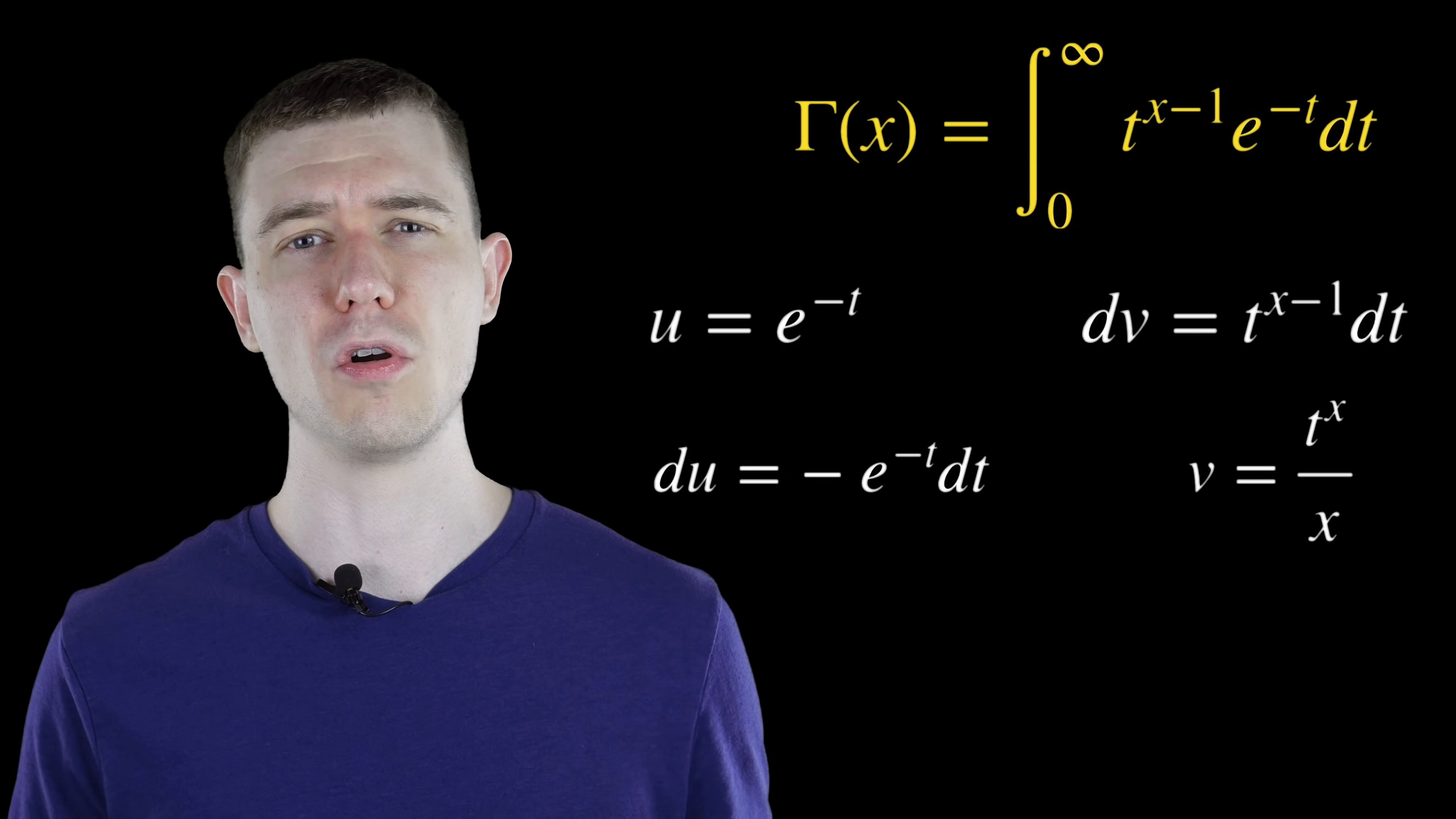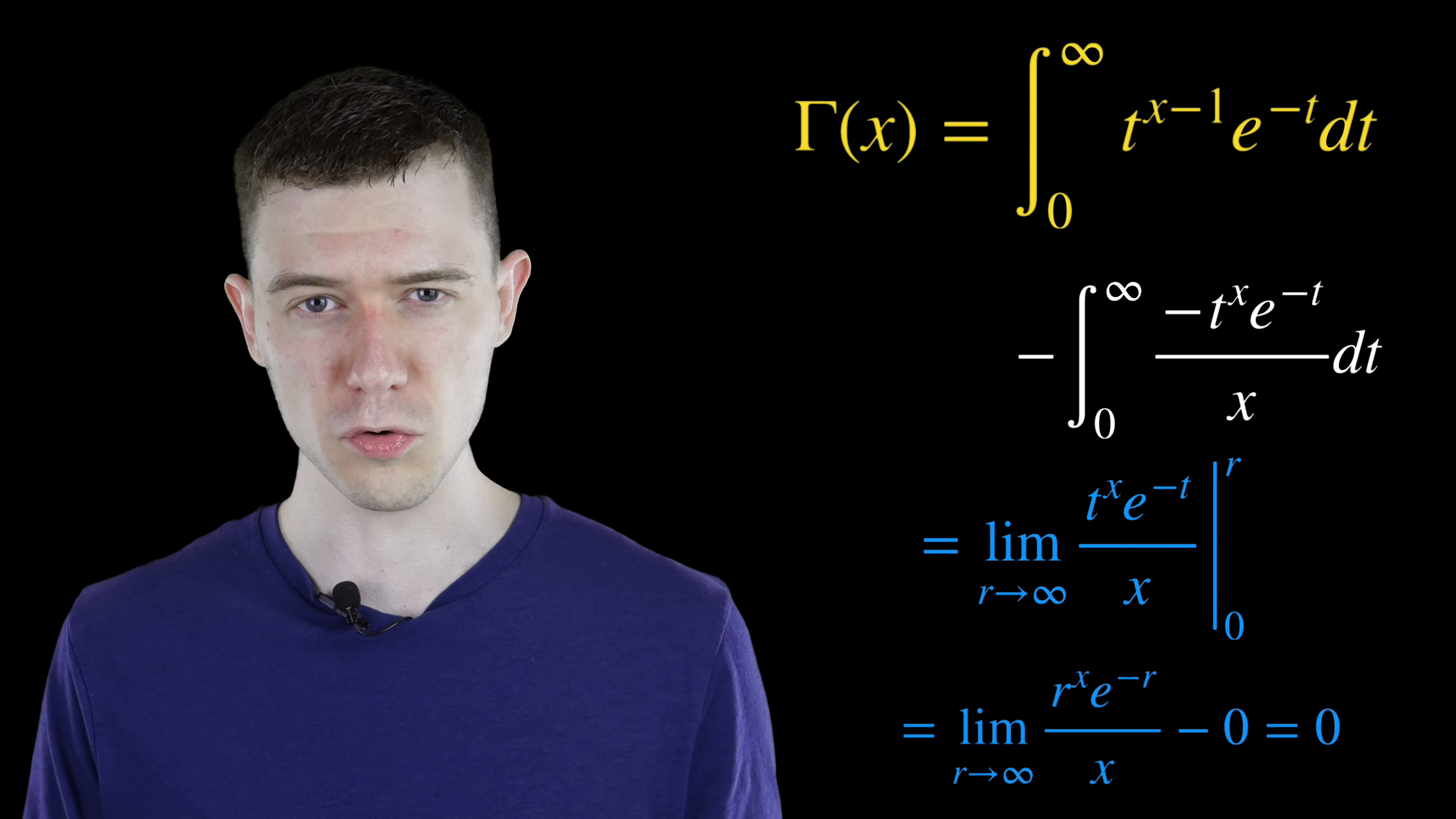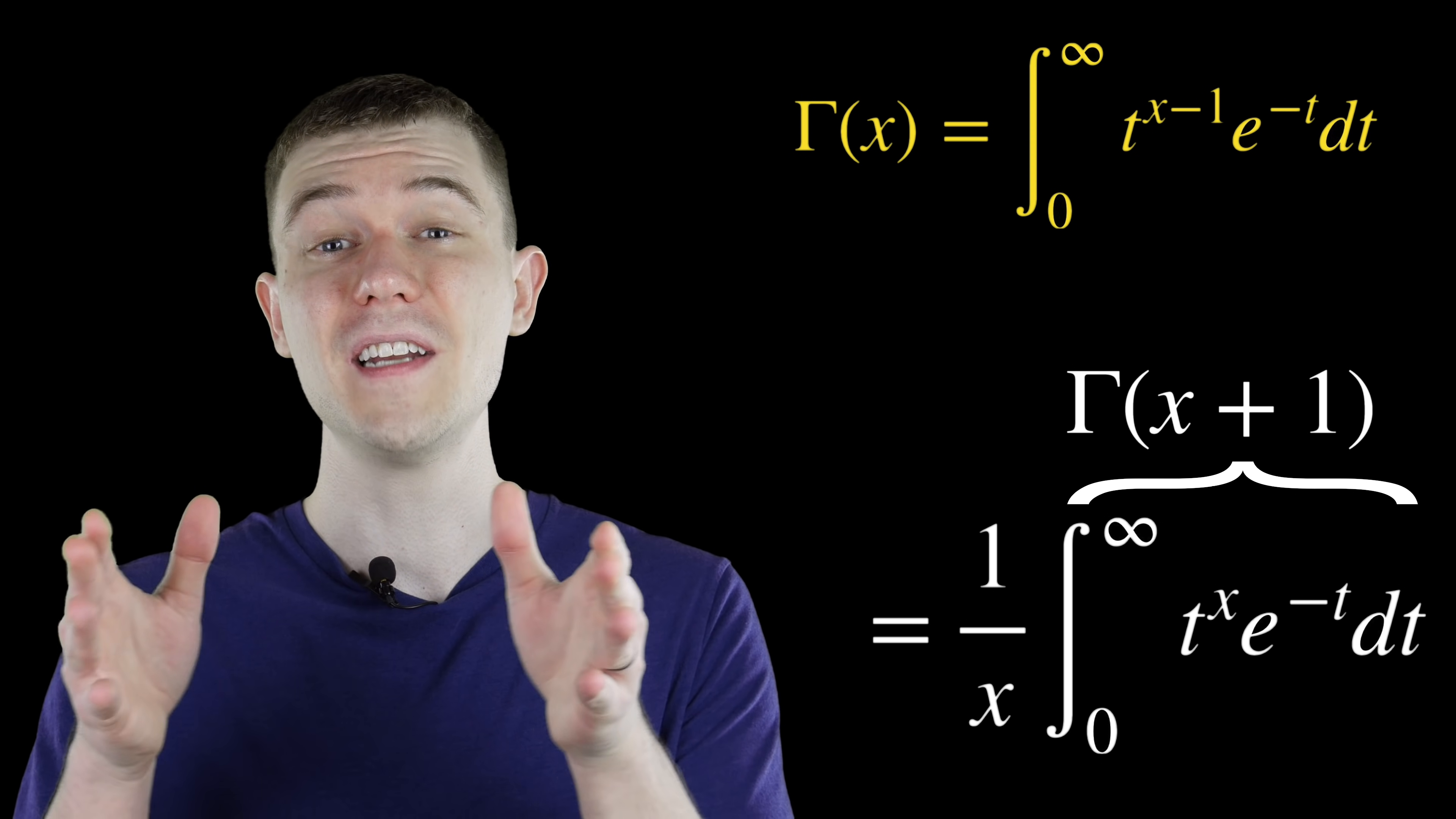uv minus the integral of vdu. Again here, this was an improper integral. So when we evaluate this, we really need to take the limit as we're going to infinity. And that first part is going to 0, because the exponential function goes so much faster than the polynomial function. It kind of takes over. And so now we have this integral left over with a 1 over x in the integrand. It's dt. So in terms of dt, the 1 over x is a constant. We can just pull it out, cancel some negatives.